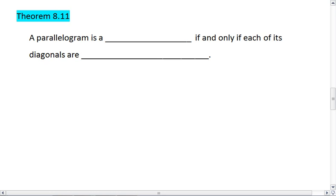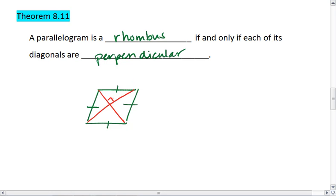Theorem 8.11 tells us that a parallelogram is a rhombus if and only if each of its diagonals are perpendicular. Thus, if a parallelogram is a rhombus, then its diagonals are automatically perpendicular.